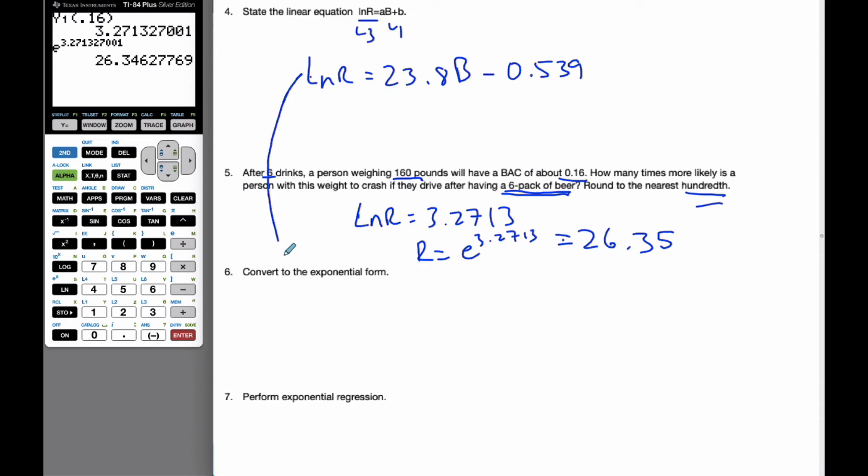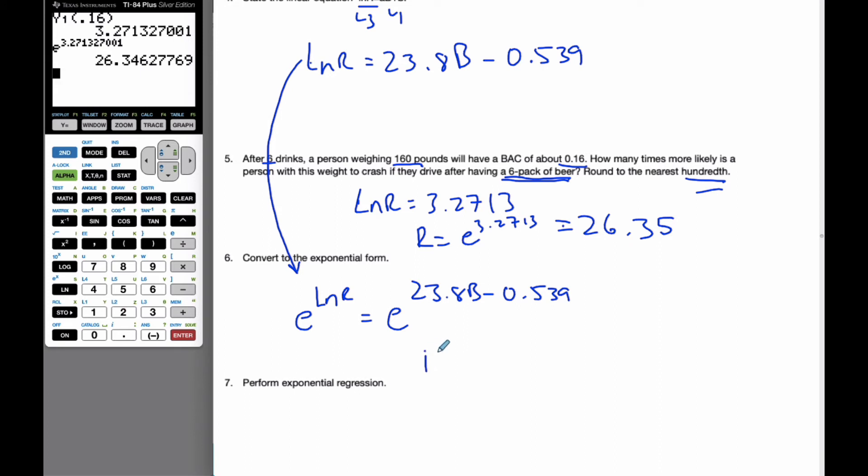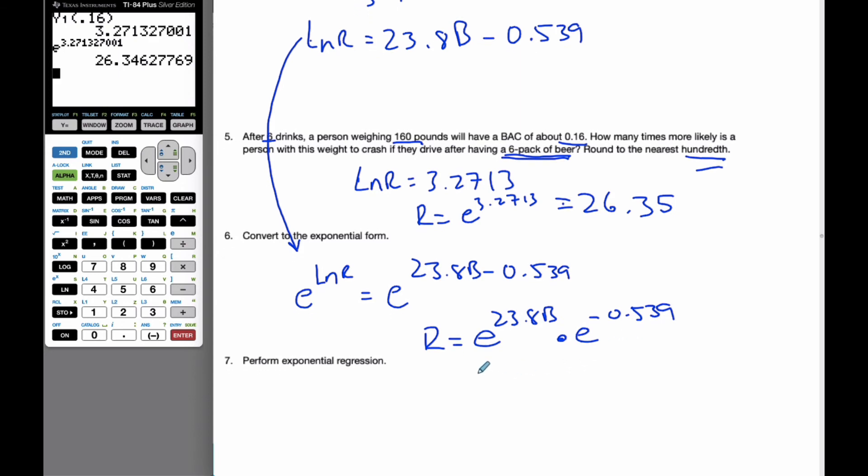Now I'm going to take this equation, and I want to convert it to an exponential form. Well, in order to convert it to exponential, I'm going to put everything to the power of e. e to the ln(R) is equal to e, so this whole thing is my exponent. The entire right-hand side of the equation is my exponent. And so this becomes R, and now I have e to the 23.8B. Well, using my exponent rules, I can say this is going to be multiplied times e to the negative 0.539. Well, R, this here is a constant, and so I'm going to find what that constant is.